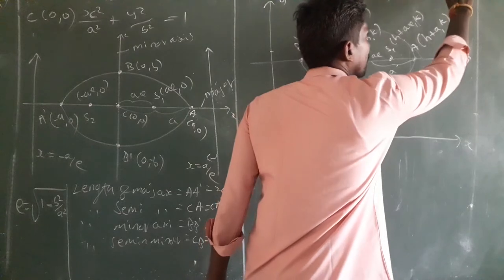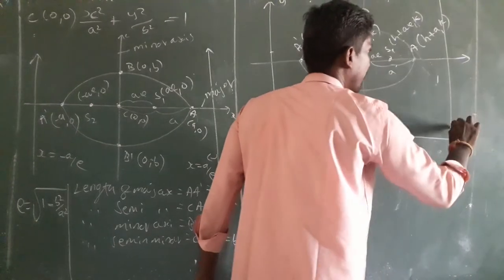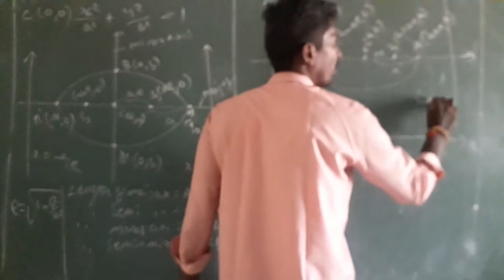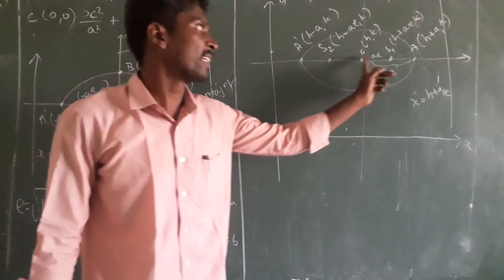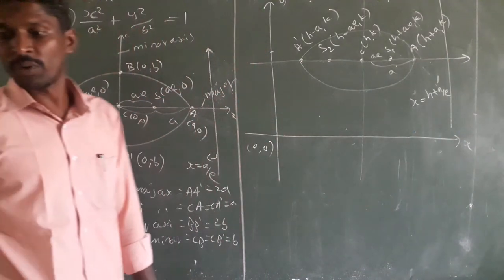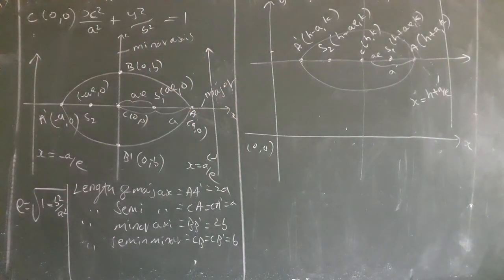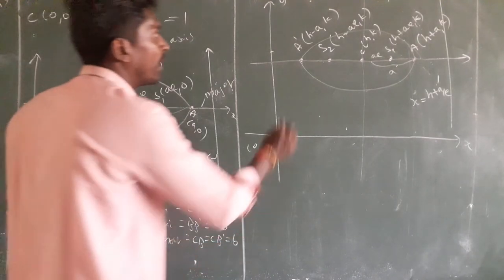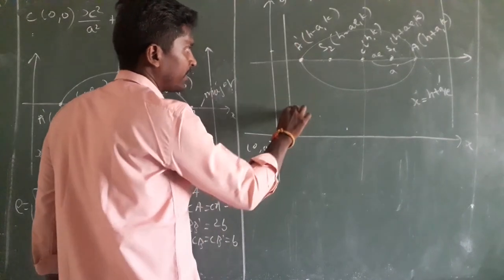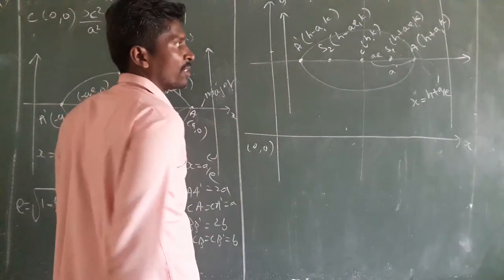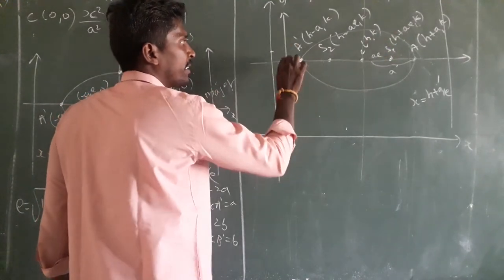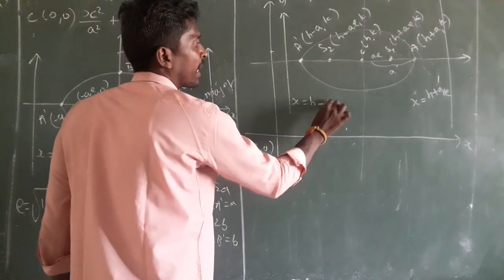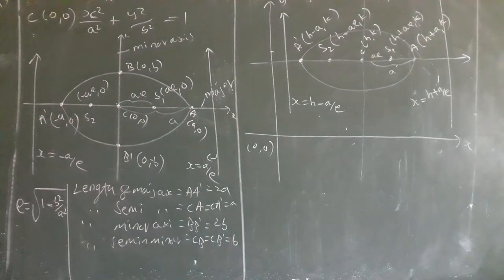Suppose we have a directrix here. Then what is the equation of the directrix? The distance from center to directrix is A by E. So x equals h plus A by E is the equation of the first directrix when center is (h, k). The second directrix equation is x equals h minus A by E.